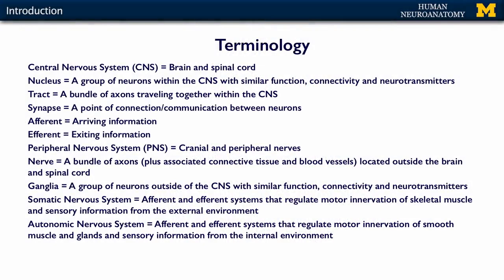Tract. That's a bundle of axons traveling together within the CNS. This is usually a bunch of axons going from one place to another together, connecting two parts of the nervous system. We'll talk about some specific tracts as we move through the course.